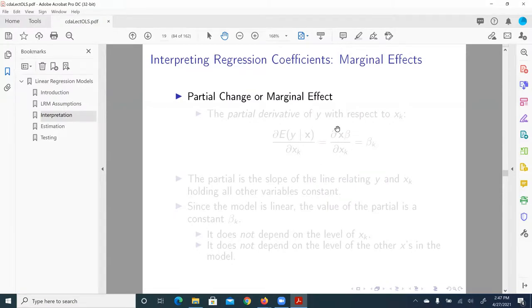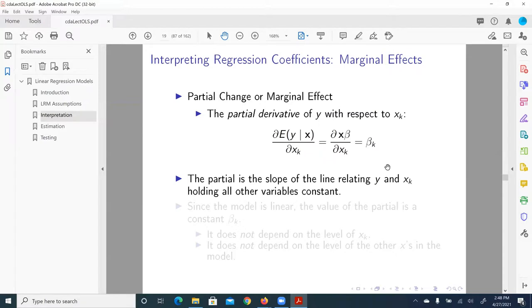Let's take the result as given. So the partial derivative of y with respect to x_k, assuming our structural model holds, we have the partial derivative of y. So here is the expected value of y given x with respect to x_k, a generic variable x_k is equal to beta_k. So the partial or the marginal is equivalent of the discrete change. So what is partial? Partial in linear regression model or linear OLS regression is the slope of the line relating y and x_k, a generic variable x_k, holding all other variables constant.